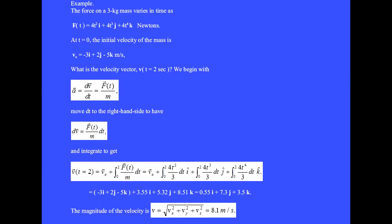The force on a 3 kg mass varies in time as F of t equals 4t squared i-hat plus 4t cubed j-hat plus 4t to the 4th k-hat. And at t equals 0, the initial velocity of the mass is vector v0 equals minus 3i-hat plus 2j-hat minus 5k-hat meters per second. What is the velocity vector v at t equals 2 seconds?